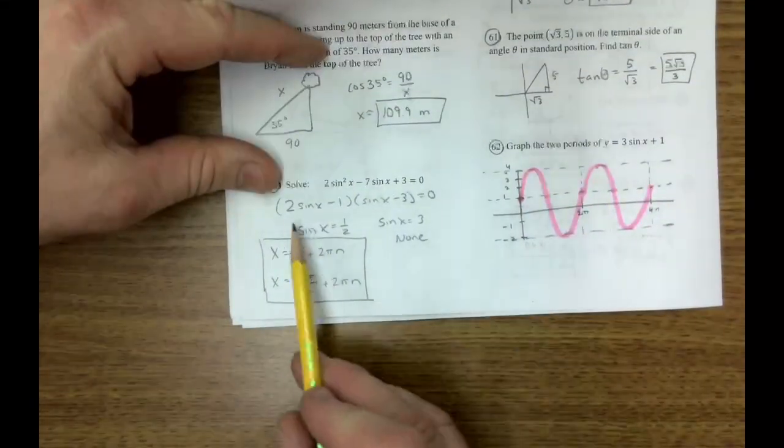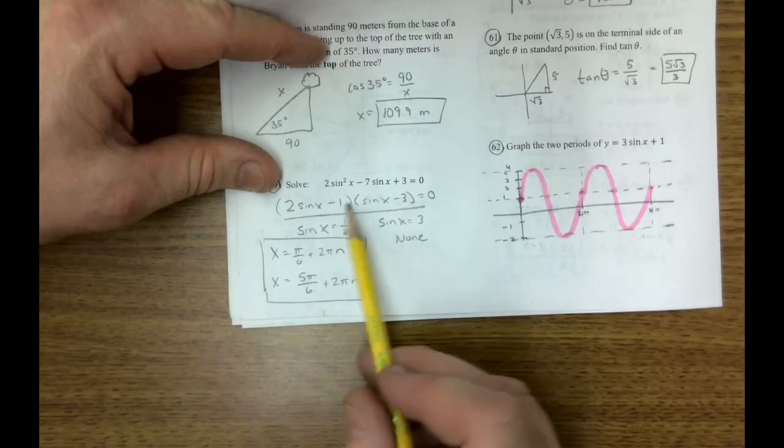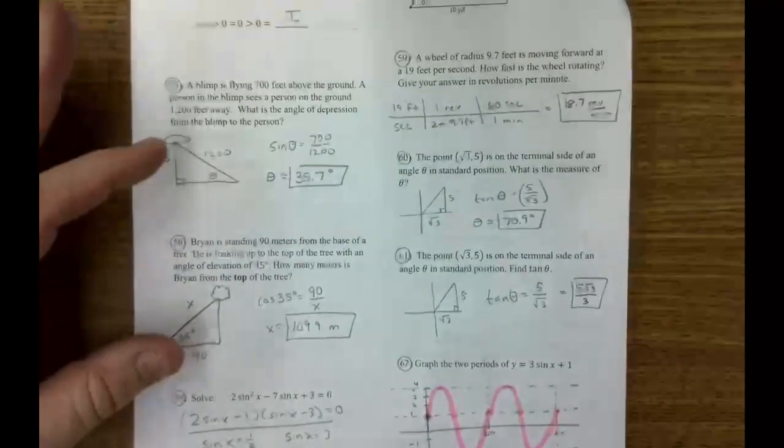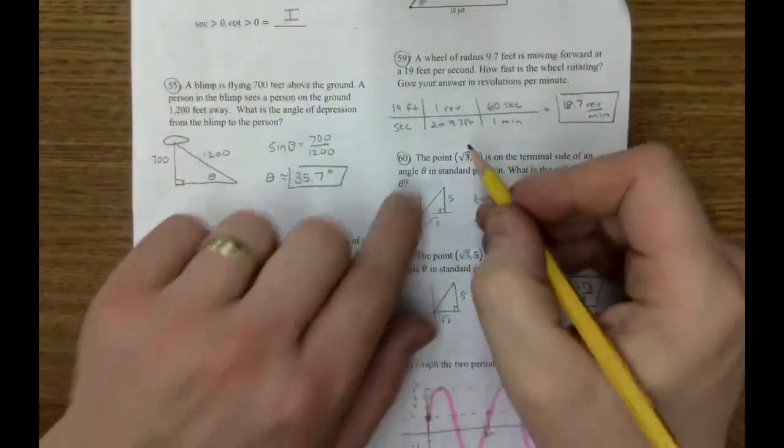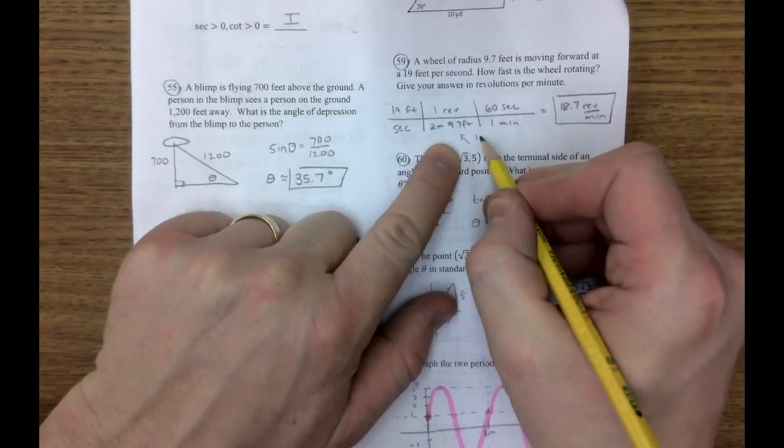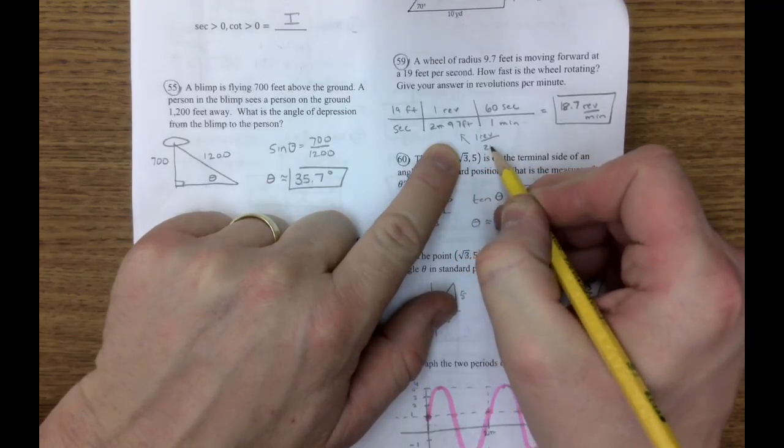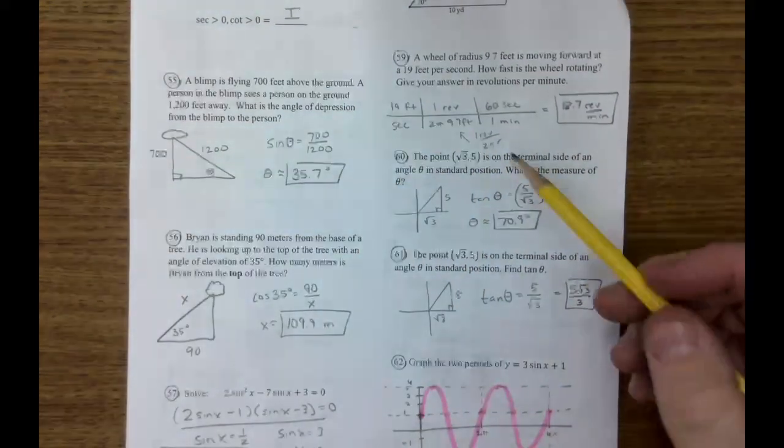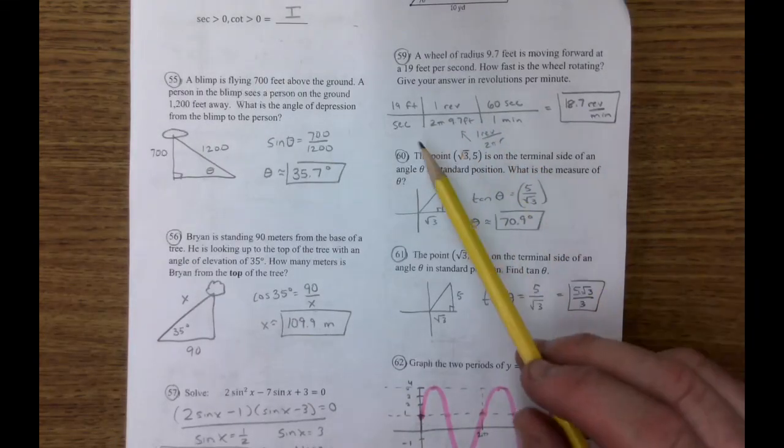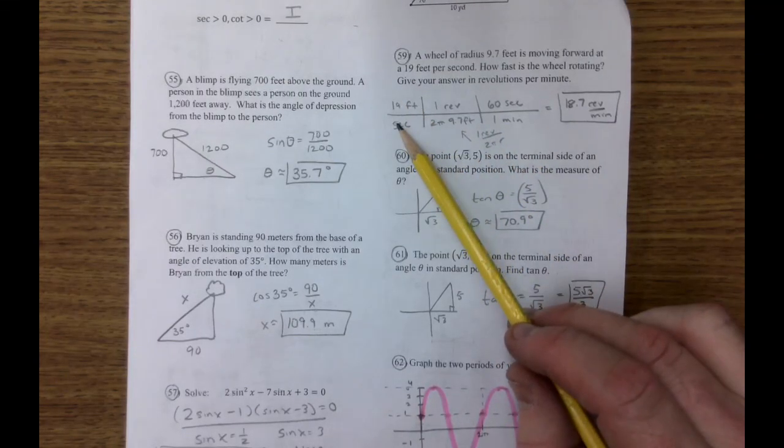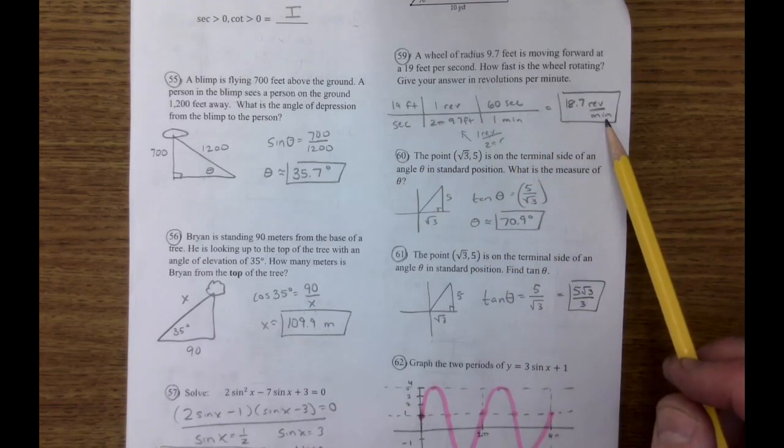So 57, if you factor it right away, you can break it apart. 59, I'm going to use that same conversion factor here that says one revolution is 2 pi r. 2 pi the radius, 2 pi radians. I'm going to start with this factor here and move to revolutions per minute.